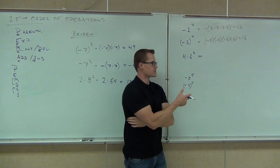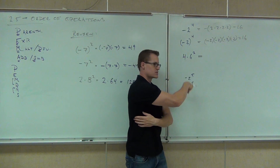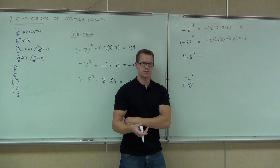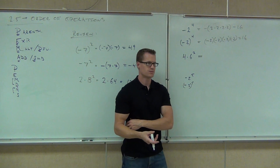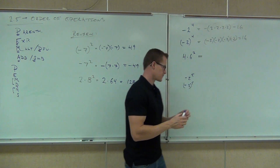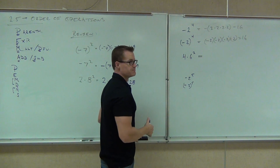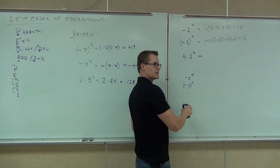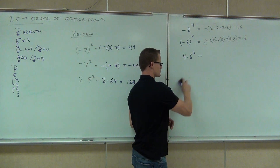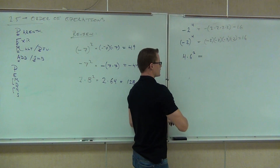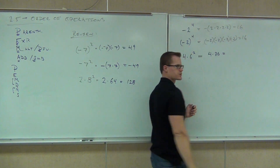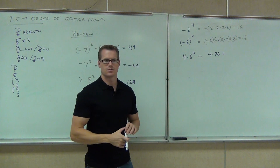For even exponents, they mean different things and you get different answers. If you have an odd exponent, that means you have an odd number of negatives. Also, 4 times 36 — hopefully you got that — is 144. How many people got all three of those right?